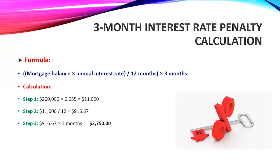So $2,750 is the three-month interest rate penalty that someone would have to pay if they have a variable rate mortgage. But in the question we are looking at, they would have to pay the three-month interest or the IRD, whichever one is higher. Now we have the three-month interest penalty — so let's take a look at what the IRD would be.